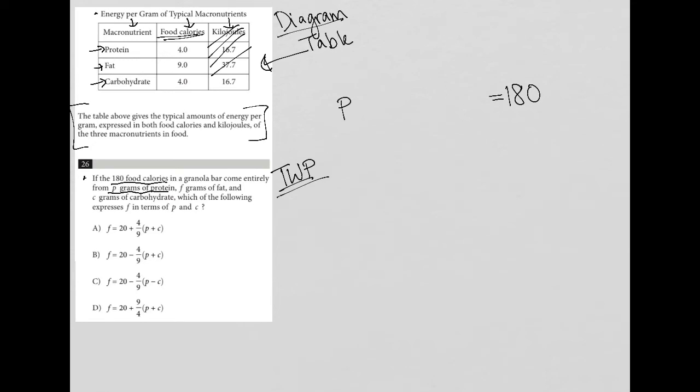But what do we know about protein? Well, we know that for every gram, every gram of protein has four food calories. So I'm going to multiply this by four. So four times P plus,